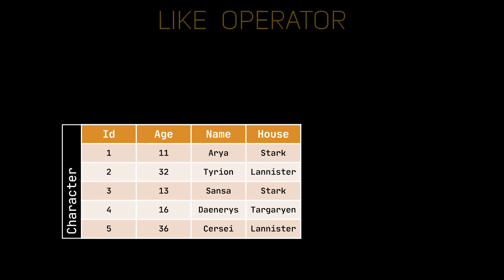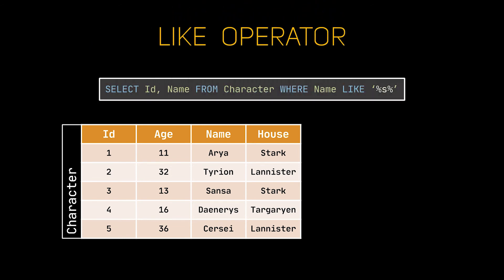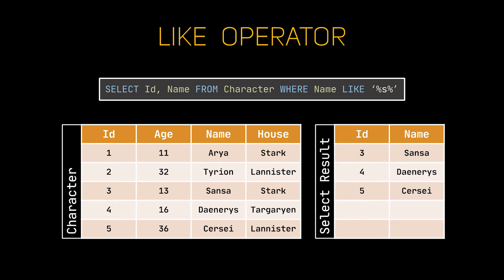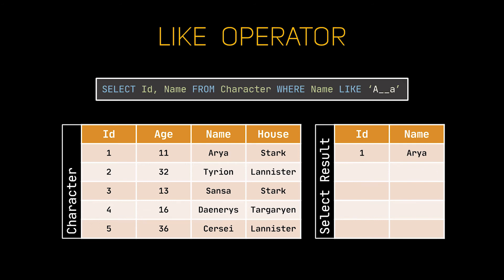The last keyword that can be used with WHERE that I want to talk about is the LIKE keyword. What distinguishes LIKE from the equals operator is that LIKE uses wildcards to identify whether the two sides of the equation match or not, and not simple equality. As you can see in this example, we used the percentage wildcard and wrapped the letter S with two of them. This means that this SELECT statement will retrieve a character if its name contains the letter S. In this example, we have three characters that meet this criterion: Sansa, Daenerys, and Cersei. Another thing you can do with the LIKE keyword is use underscores. We specify that we need to select the characters whose names start and end with an A and contain only two letters between these A's. In this example, only one character meets this criterion, and it is Arya.